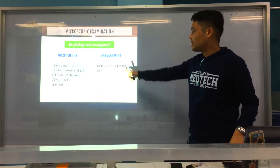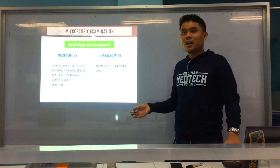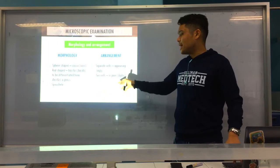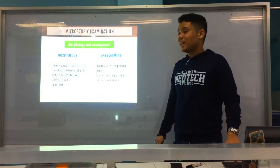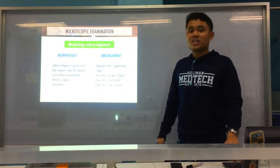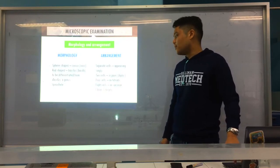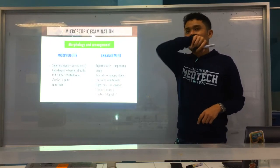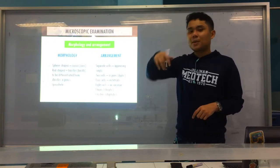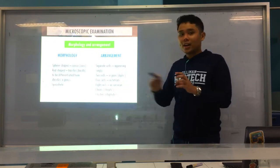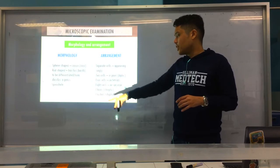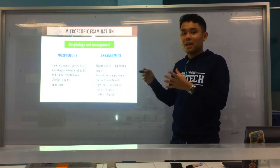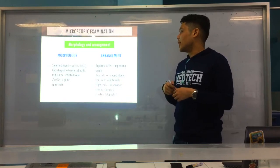And arrangement: separate cells appearing singly, like single, loner. Two cells in pairs, usually diplo. Four cells in tetrads. Eight cells in sarcinae. And you have chains, strepto. And of course clusters, staphylo. So you were discussed strepto and staphylo. When you say strepto, they are in chains. And clusters, like grapes, that's staphylo. Meaning it means grapes, meaning they are in clusters.